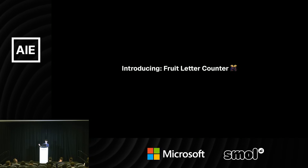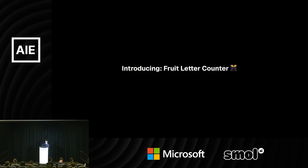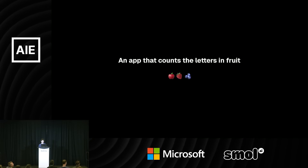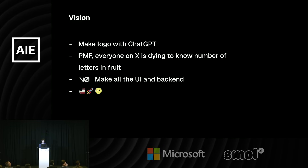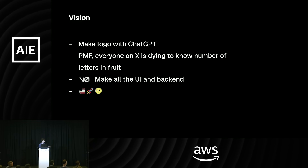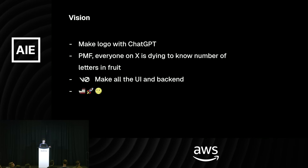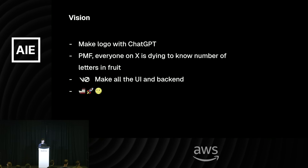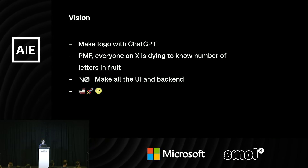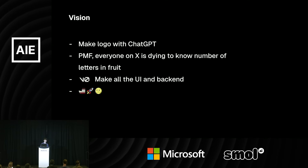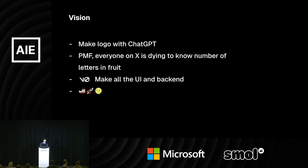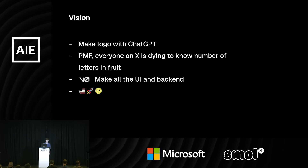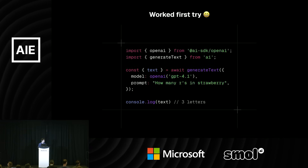It's a story about an app called Fruit Letter Counter. All it is is an app that counts the letters in fruit. The vision: we'll make a logo with ChatGPT — there might be product-market fit already, because everyone on X is dying to know the number of letters in fruit. It's a joke on the 'how many R's are in strawberry' prompt. We had V0 make all the UI and backend, and then we ship. So we had V0 write the code.